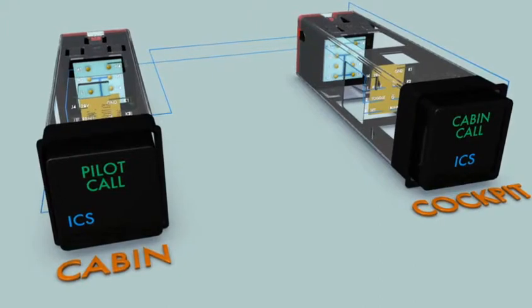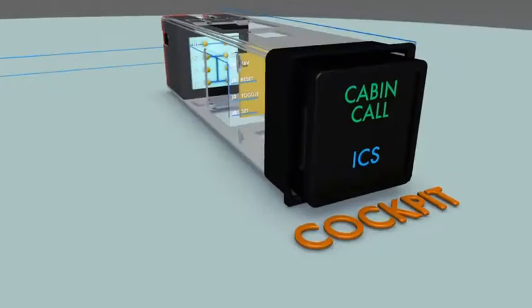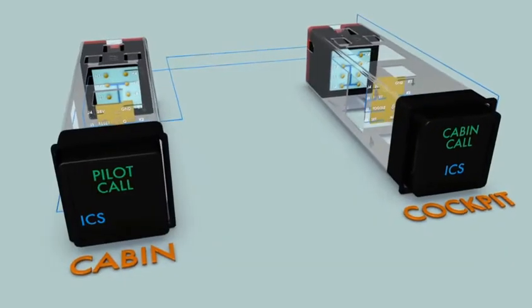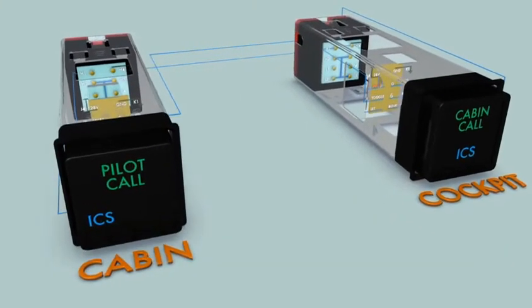Notice the ICS legend and intercom function are controlled exclusively by the cabin call switch in the cockpit. The key input assigns priority to the pilot and prevents any effort by the cabin to cancel the call.